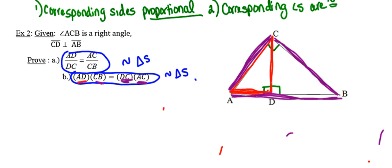In order to do that, I'm going to use angle-angle similarity. Notice that angle A is shared between the red triangle and the purple triangle, so it's going to have to be congruent to itself. In the purple triangle, angle ACB is a right angle, and in the red triangle, angle ADC is the right angle. Those two right angles are congruent to each other, giving us a second pair of congruent angles. So I'm going to start by proving these two triangles similar using the angle-angle similarity postulate.